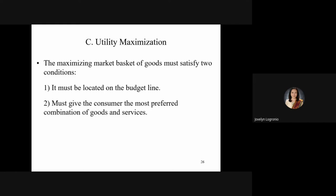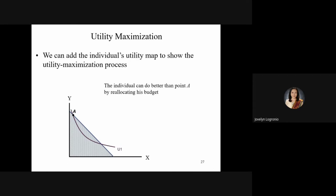The maximizing market basket of goods must satisfy two conditions. First, the basket of goods must be located on the budget line, meaning it is within the income of the consumer. Second, the market basket of goods must give the consumer the most preferred combination of goods and services. We can add the individual's utility map to show the utility maximization process.